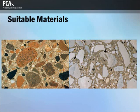This slide shows a cross-section of hardened concrete made with, on the left, rounded siliceous gravel, and on the right, crushed limestone. Cement and water paste completely coats each aggregate particle and fills all spaces between particles.